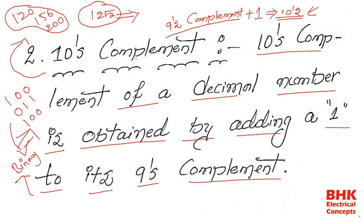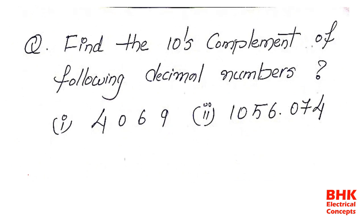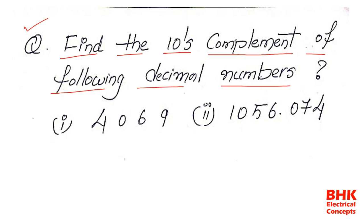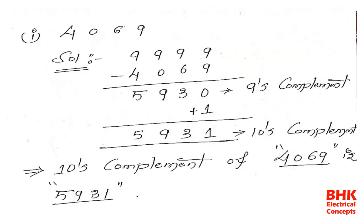We are going to consider example problems to see how we get the tens complement and what the procedure is. The question is: find the tens complement of the following decimal numbers. The first number is 4069 and the second is 1056.074. For 4069, to get the tens complement we first need to find the nines complement.